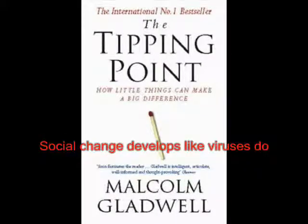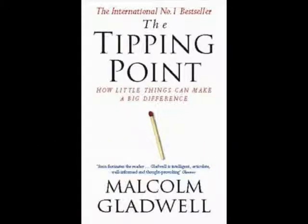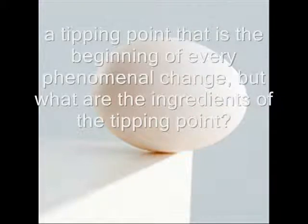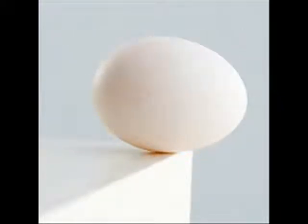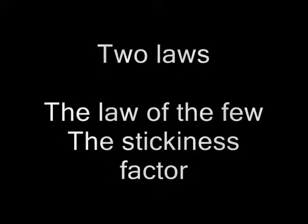Let's get back to Malcolm Gladwell. He states in his book The Tipping Point that marketing can also be looked at from an epidemic point of view. The only difference is we don't want the disease to die out — we want everyone to get infected by the product we are trying to sell. Malcolm Gladwell has made a theory about social change, saying that human behavior or social change develops like viruses do. But before these changes can happen on an enormous scale, there is a tipping point that is the beginning of every phenomenal change.